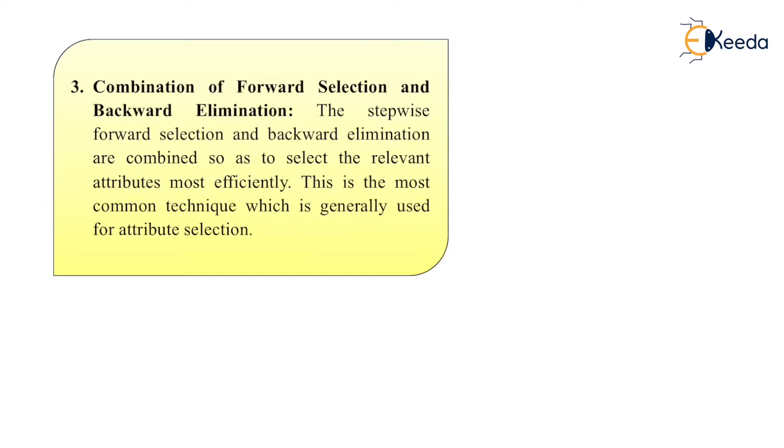Third is combination of forward and backward elimination. The stepwise forward selection and backward elimination are combined so as to select the relevant attributes most efficiently, and this is the most common technique which is generally used for attribute selection.